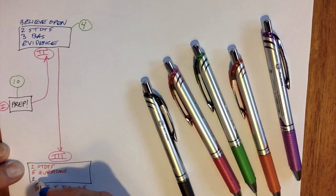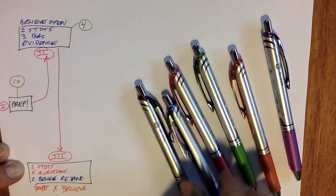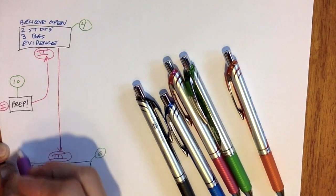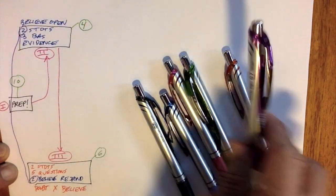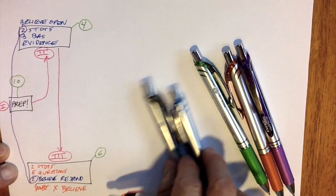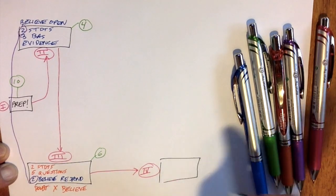One twist in this debate format is that the two students who opened for the believe side will not be the two students responding to the doubt side's cross-examination. Two other believe-side students must work with the openers during prep time, knowing they'll be cross-examined on those ideas and getting ready to respond — that's a really tough job. The doubt crossing the believe side lasts about six minutes.